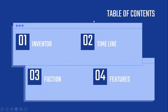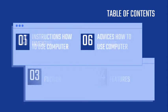Here is the table of contents. First, the inventor. Second, the timeline. Third, the function. Fourth, the features. Fifth, instructions on how to use a computer. Sixth, advice on how to use a computer.